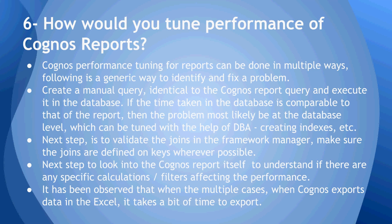To start, you would create a manual query very identical to the Cognos report query and try to execute it in the database. If it's an Oracle database, use SQL Developer, SQL Plus, or Toad; if it is DB2, use Command Center or Control Center. Make sure the data returned is fast. If you find an issue in the database itself, the first step of tuning would be in the database — work with a DBA to understand indexes, partitioning, etc., to implement the query faster.